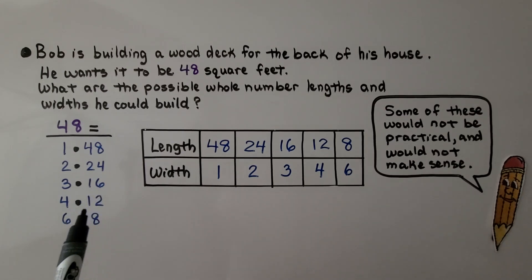So once we know what the factors of the product are, we can make a table and fill it out with all the values and the possibilities of the lengths and widths.